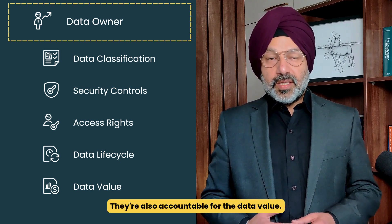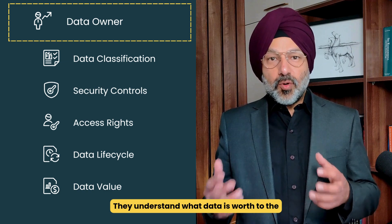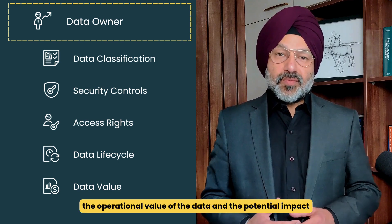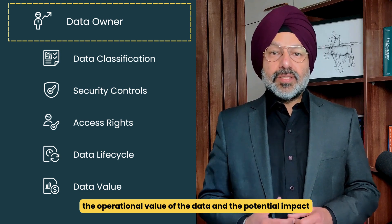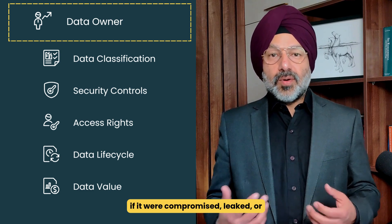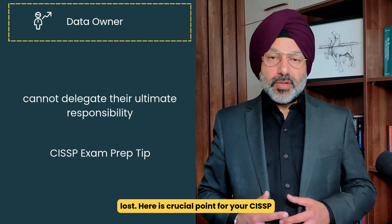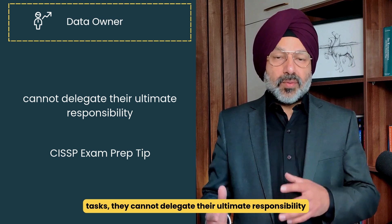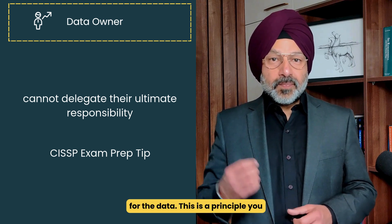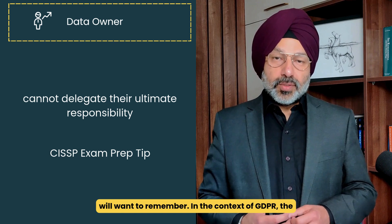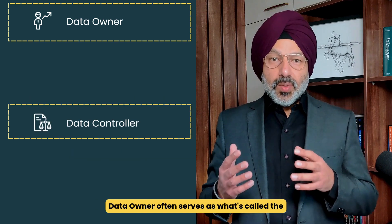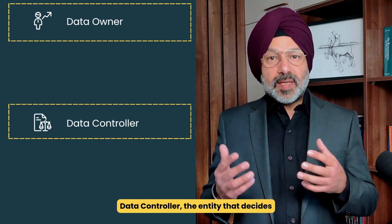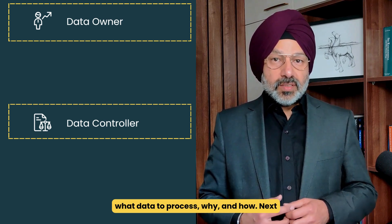They are also accountable for the data value — they understand what data is worth to the organization, assessing both its operational value and the potential impact if it were compromised, leaked, or lost. Here is a crucial point for your CISSP exam: while data owners can delegate day-to-day management tasks, they cannot delegate their ultimate responsibility for the data. In the context of GDPR, the data owner often serves as the data controller — the entity that decides what data to process, why, and how.